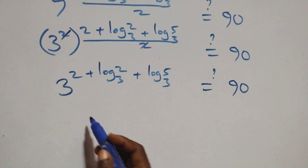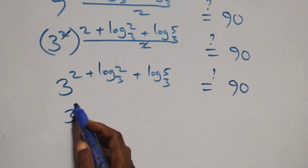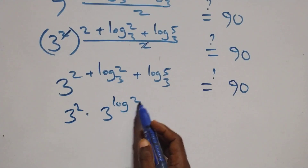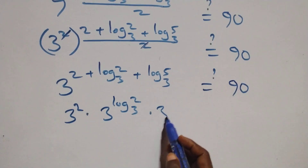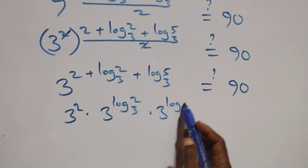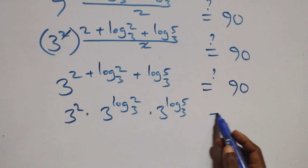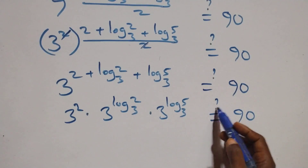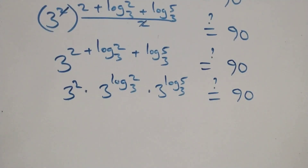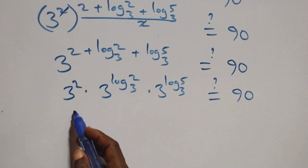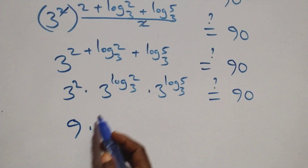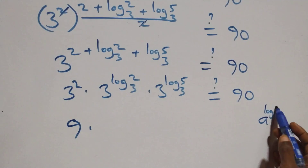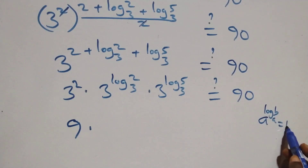We apply the log indices rule and rewrite this as 3 squared times 3 raised to power log 2 base 3 times 3 raised to power log 5 base 3, equals 90. Then 3 squared is the same as 9. This follows the identity: A raised to power log B to base A equals B.